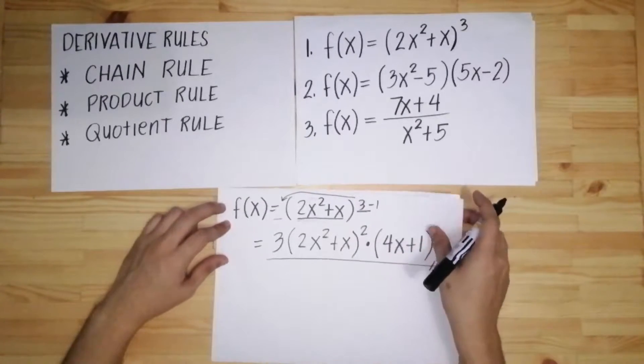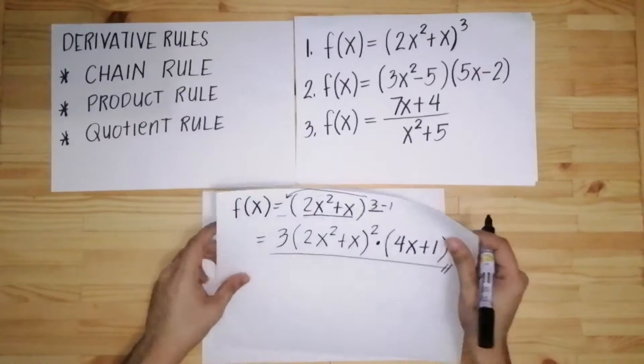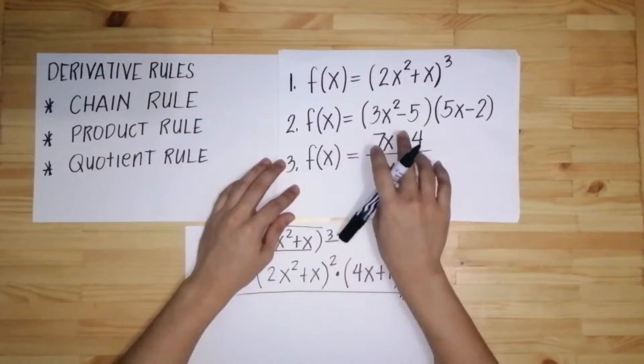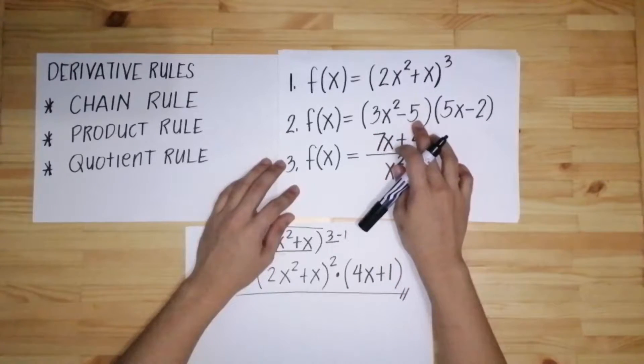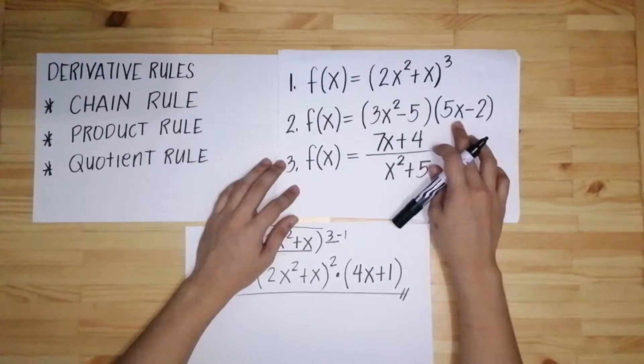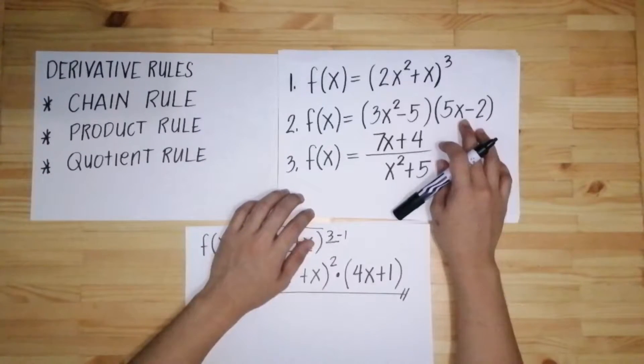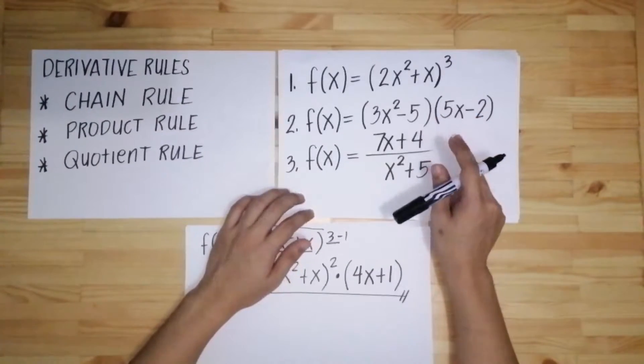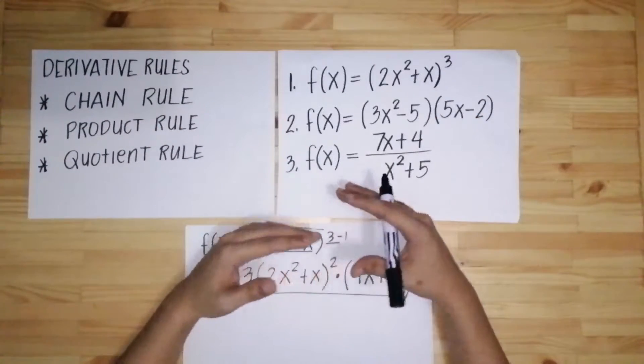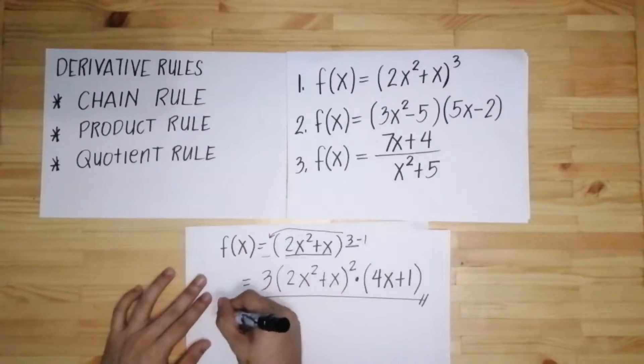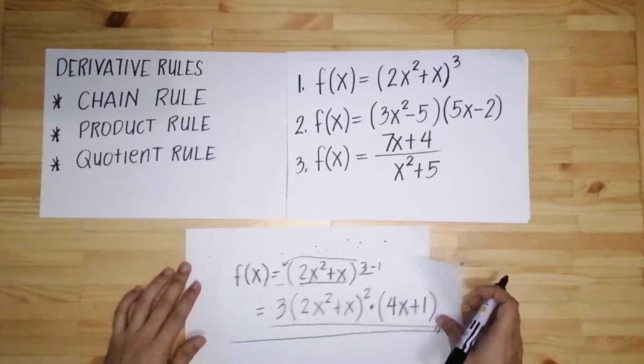Next, let's have the product rule, number 2. As you can see here, we have f(x) equals quantity of 3x squared minus 5 times 5x minus 2. If you see a function that has two factors that is being multiplied with each other, gagamit ka ng product rule. So sa product rule, ang gagawin natin ay ganito.